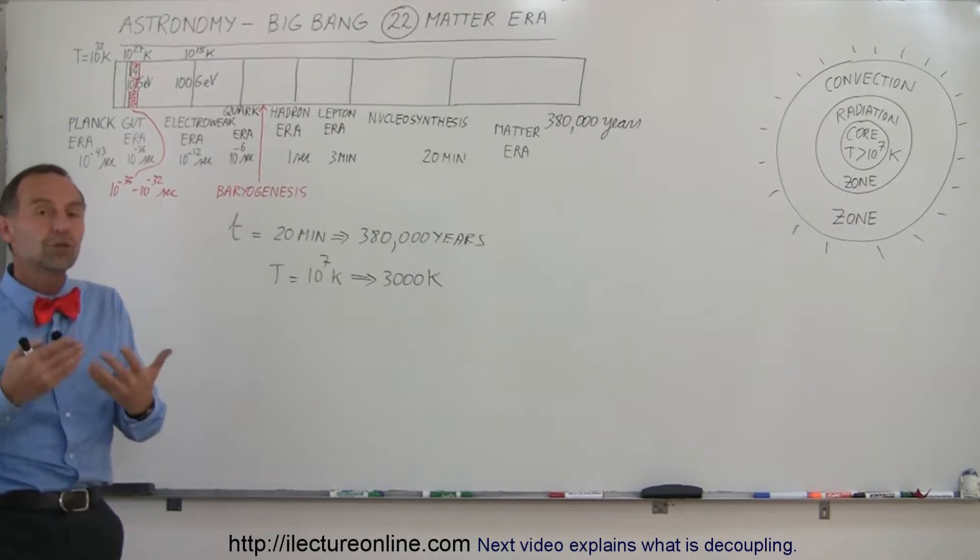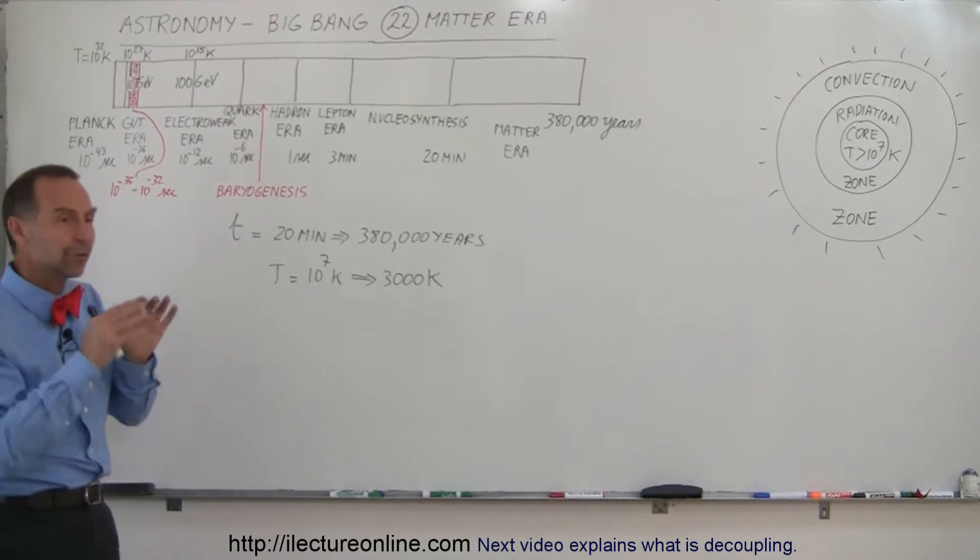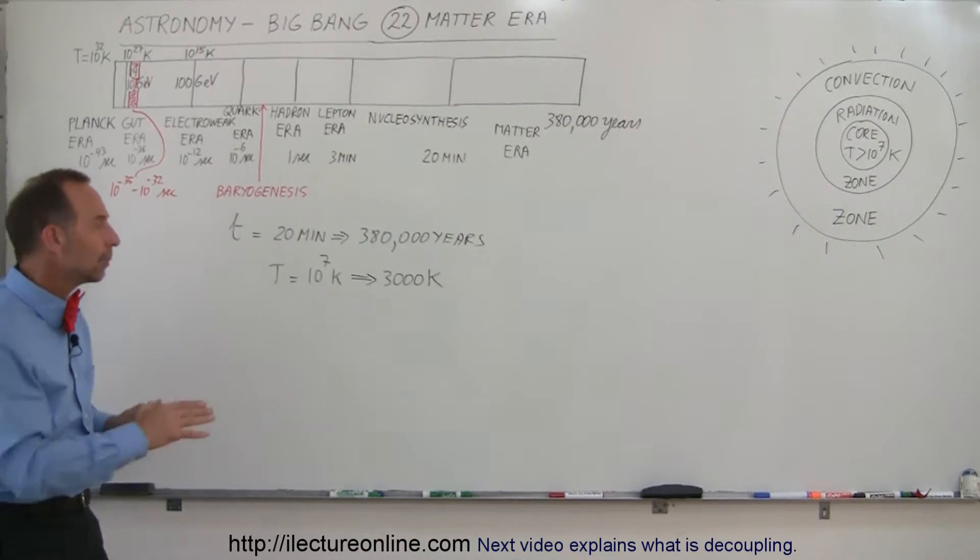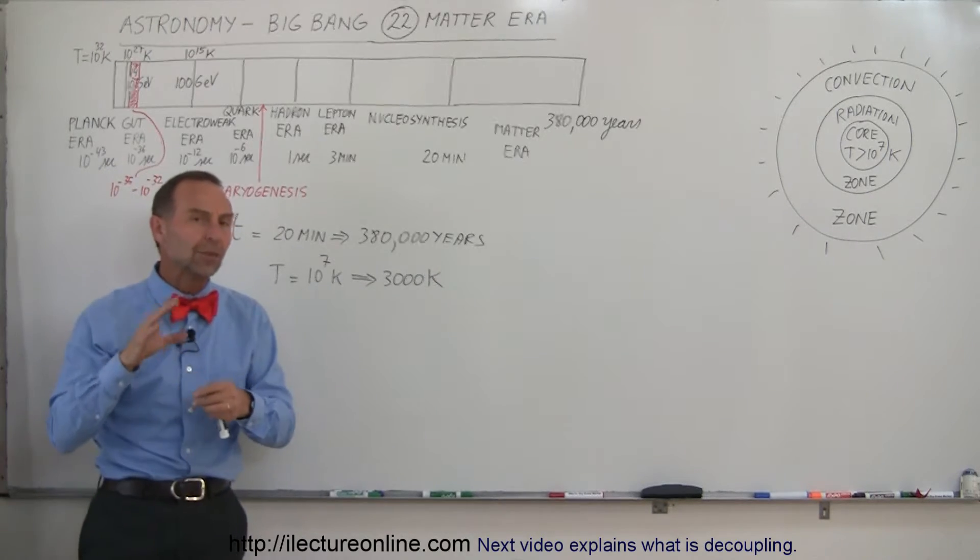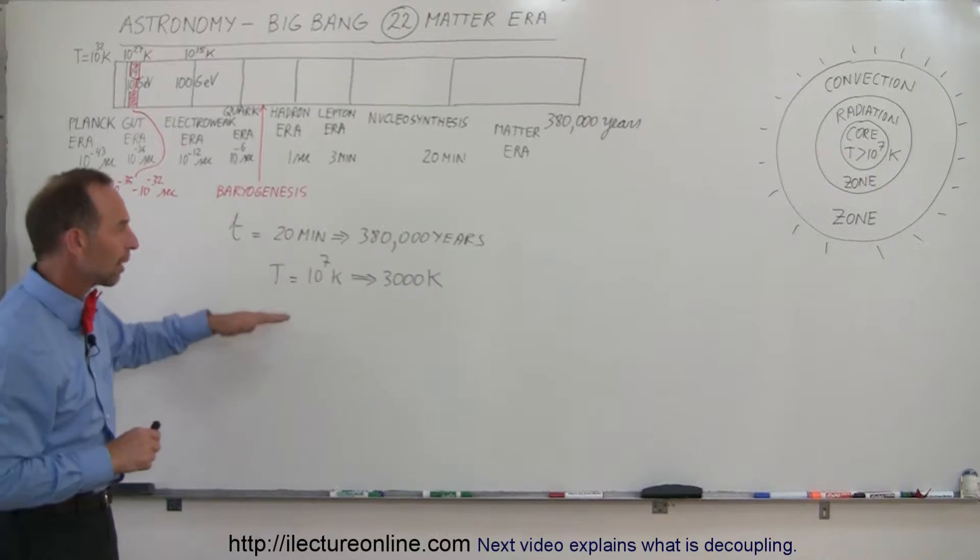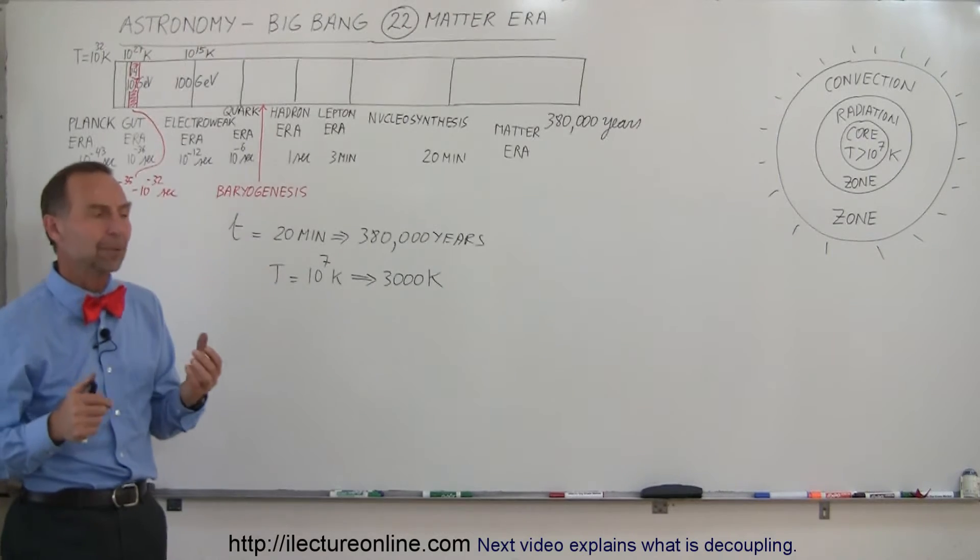No more nuclear fusion would take place and the universe kind of quieted down and began to cool down over the next 380,000 years until the universe cooled down to a temperature of about 3,000 Kelvin. So it took about 380,000 years for that to happen.